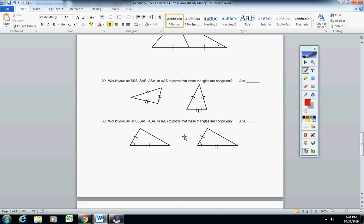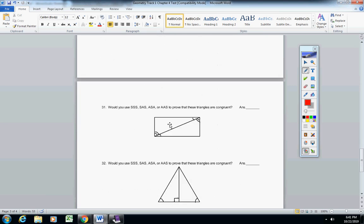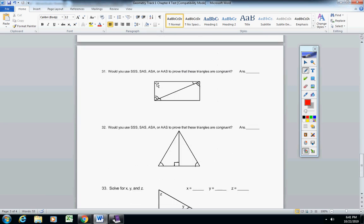29 and 30, tell me which one of these you would use to prove that the triangles are congruent. 31 and 32, same thing. Tell me which one of these four you would use to prove that the triangles are congruent.